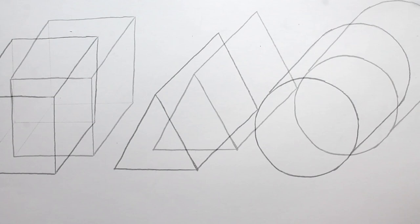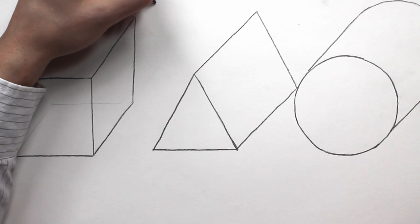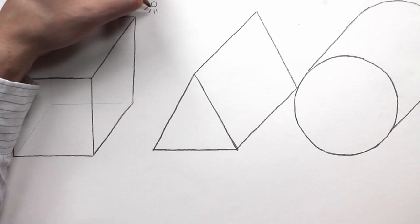So we've used line to create a sense of perspective and the illusion of form and we're going to reinforce that now by starting to apply tone. Now the most important thing when you're wanting to apply tone to create the illusion of form is to choose a light source or work out where the light is coming from in your image.